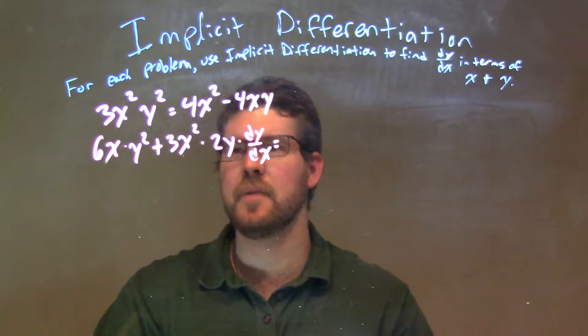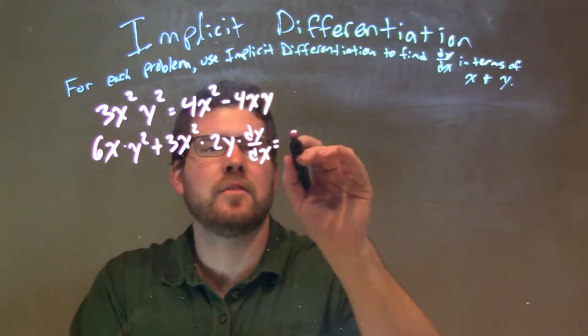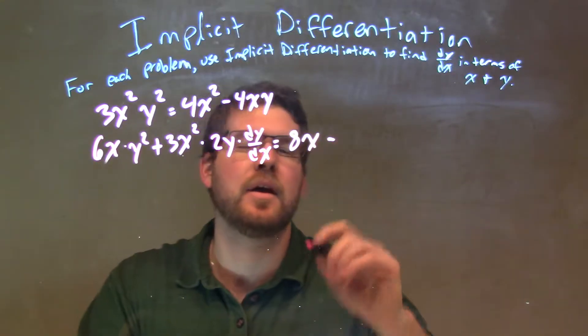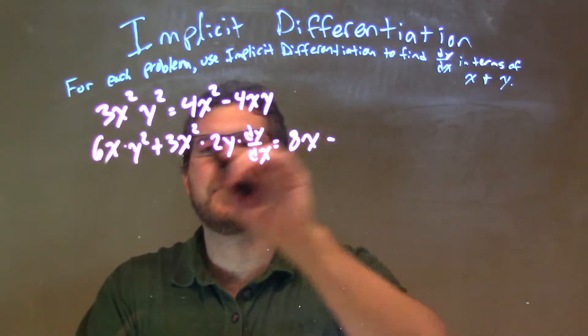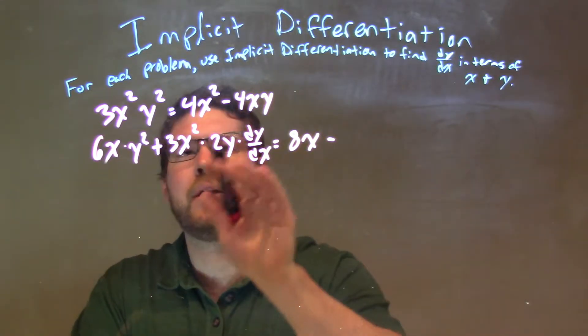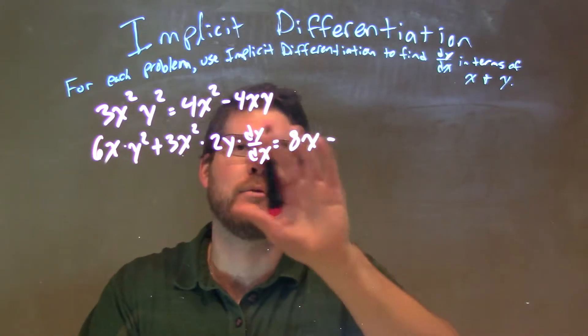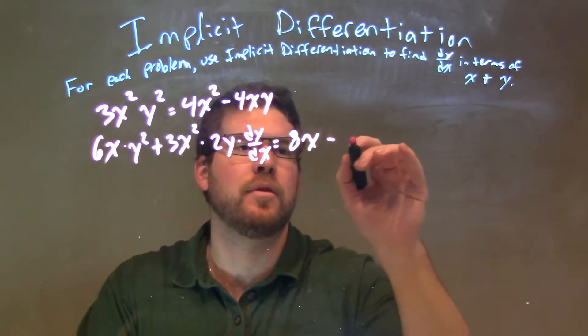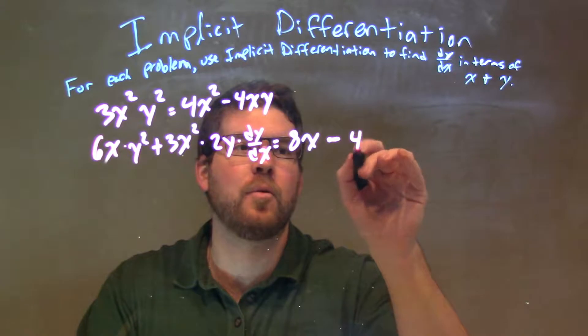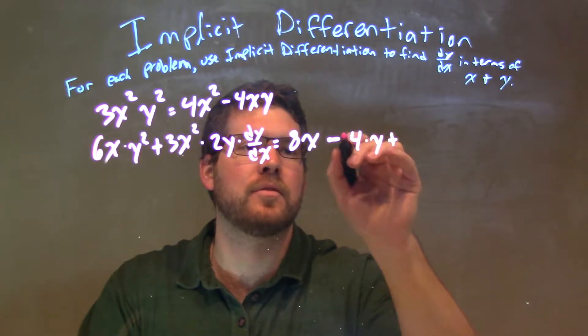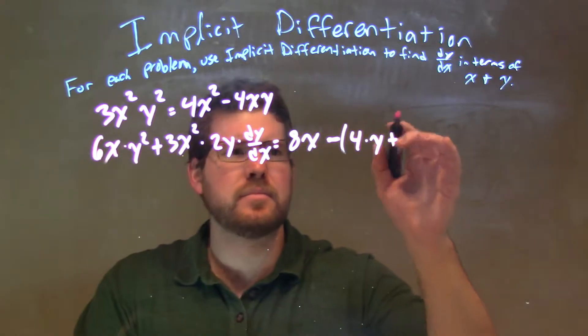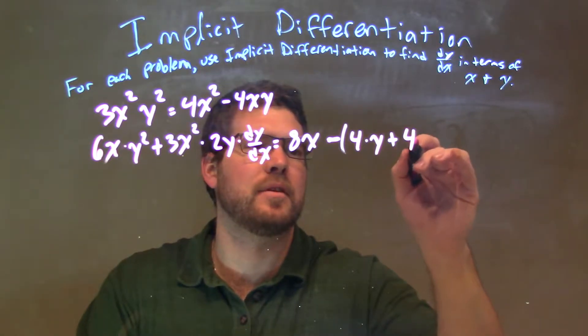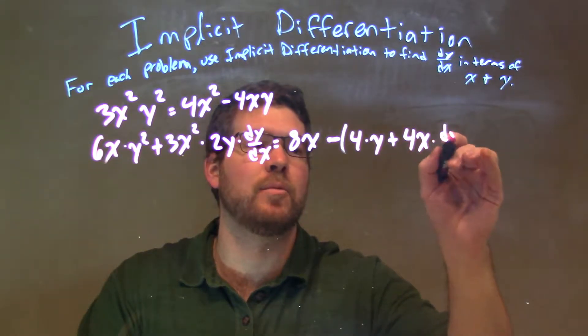Now that's equal to the right-hand side. 2 times 4 is 8, so we have 8x minus, now we've used the product rule again. And this time I'm going to do it the same way without really pulling out the 4 there. Derivative of 4x is 4, we have y left over, plus we have 4x times the derivative of y, which is just dy/dx.